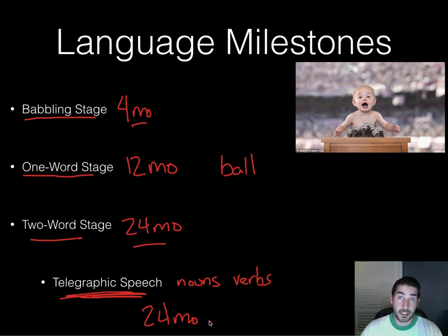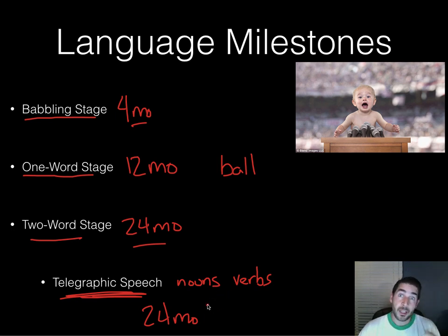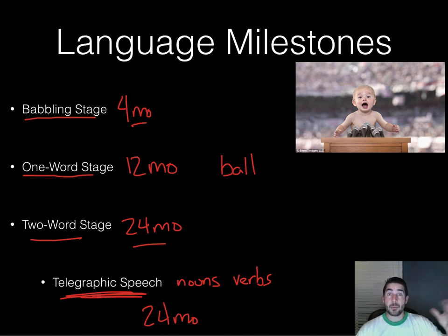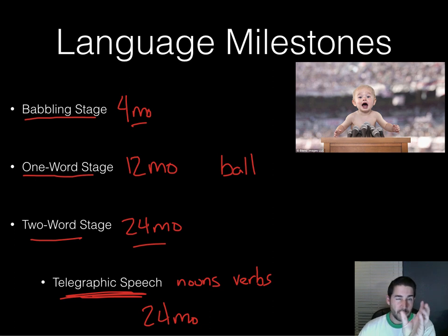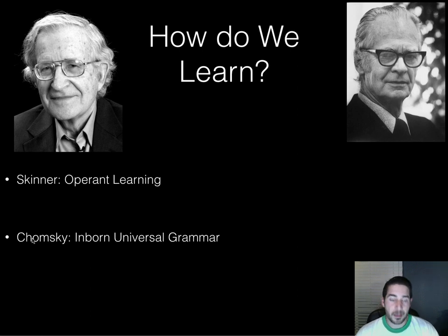Once you get past 24 months into the preschool years, language develops like wildfire. This is one reason why preschool and a nurturing environment are so important at a young age — kids pick up language so quickly. If they don't develop it during this window, it becomes much harder. This is what we call the critical period — a window where language must be developed or the opportunity closes.